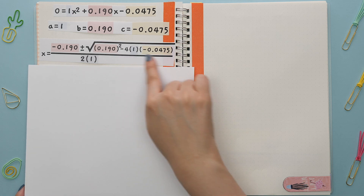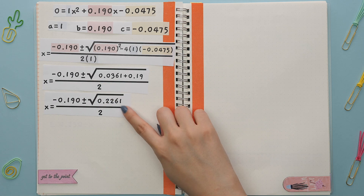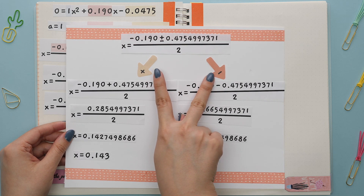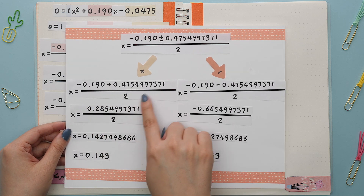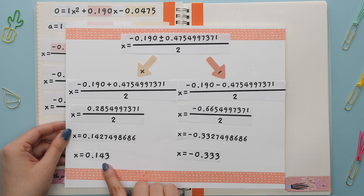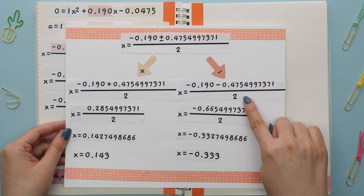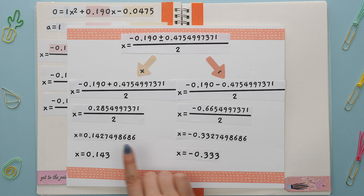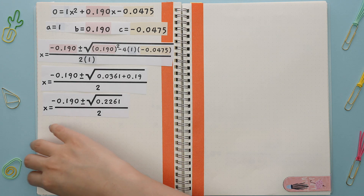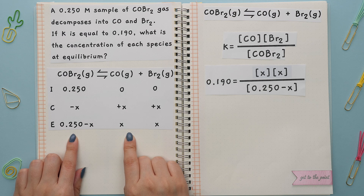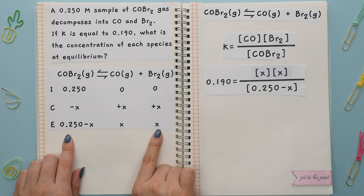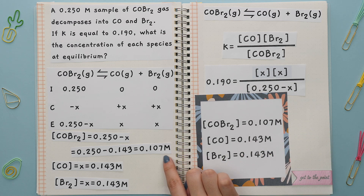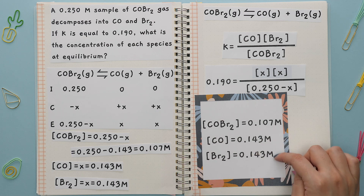We will square the b term first and multiply the values together. Adding those two values and taking the square root gives us our result. Split this into two separate fractions — one with the plus sign and one with the minus sign. Adding then dividing gives our first X value rounded to 3 sig figs. Subtracting then dividing gives our second X value. Since X refers to concentration, only the positive X value is correct. Going back to our ICE table, plug in the X value and solve. The concentration at equilibrium for the reactant and each product can then be determined from row E.